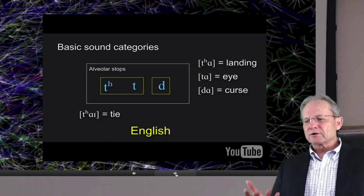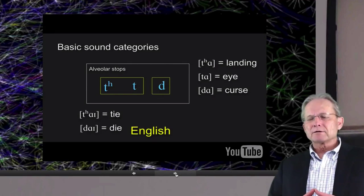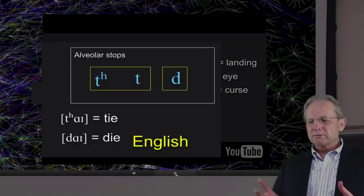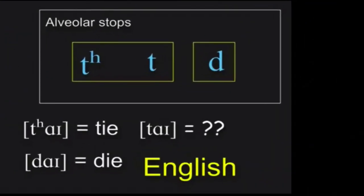Thai distinguishes three different kinds of alveolar stop sounds. English only distinguishes two in terms of the categories of sounds that matter. The categories of sounds that we need to pay attention to in order to understand the meanings of different words and distinctions between different words.